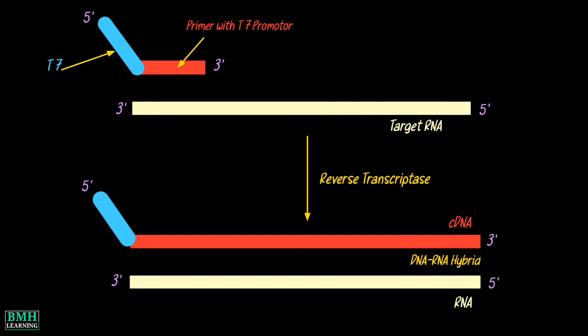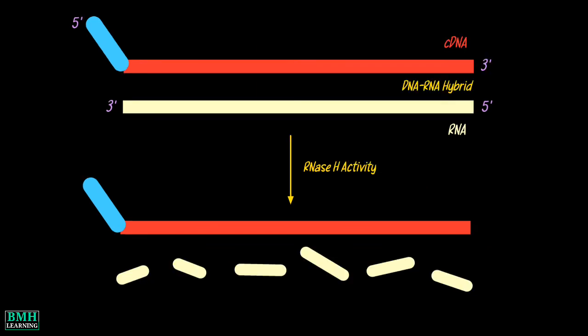Using target specific primer and reverse transcriptase included in the reaction mixture, the RNA is transcribed to cDNA. This leads to the formation of DNA-RNA hybrids. The RNA in the DNA-RNA hybrids is destroyed by RNase H activity.